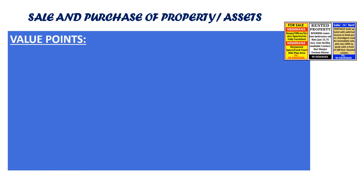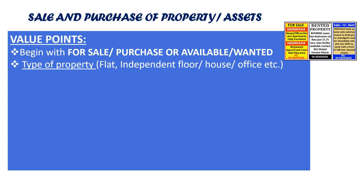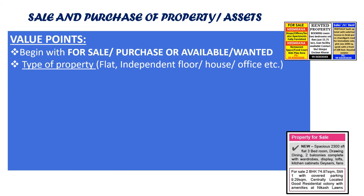Value points to keep in mind while drafting classified advertisements for sale, purchase of property, and assets: Begin with 'For Sale,' 'Purchase,' or 'Available.' You can also start with 'Wanted.' Give a brief description of the property — whether it's a 2BHK, 3BHK flat, or independent house, office, etc. You can also mention the size of the floor.